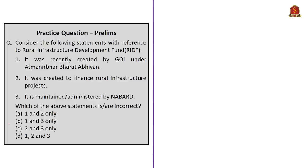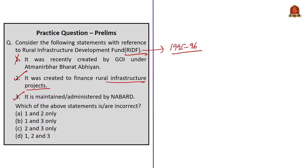Consider the following statements with reference to Rural Infrastructure Development Fund. Statement 1: It was recently set up by Government of India under Atmanirbhar Bharat Abhiyan. This is incorrect since the fund was set up as far back as 1995. Statement 2: The fund is created to finance rural infrastructure projects. This statement is correct. Statement 3: This fund is maintained or administered by NABARD. This statement is also correct. Since we are supposed to identify correct statements, the correct answer is option C — 2 and 3 only.